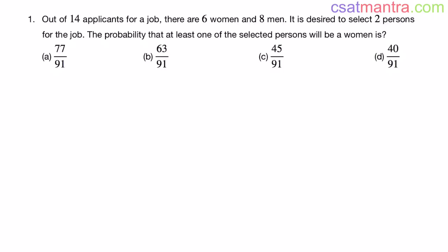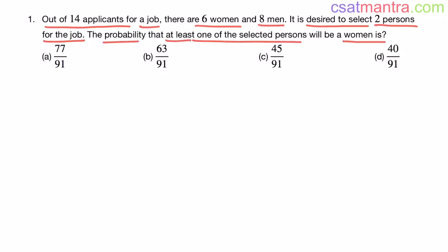Out of 14 applicants for a job, there are 6 women and 8 men. It is desired to select two persons for the job. The probability that at least one of the selected persons will be a woman is?